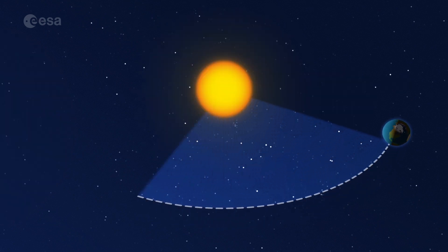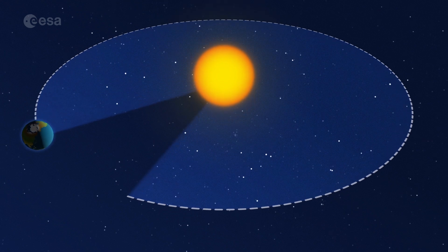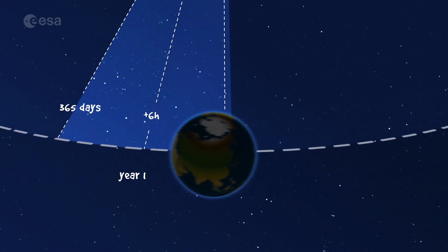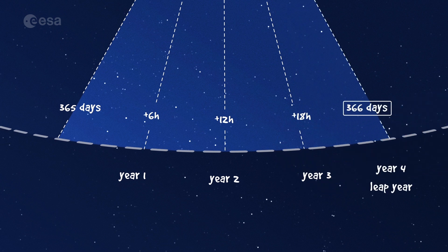As well as spinning on its axis, the Earth orbits the sun. It takes the Earth 365 days and a quarter to make a complete orbit around the sun. So, every four years, you add these quarter days together and have a leap year, which has 366 days.